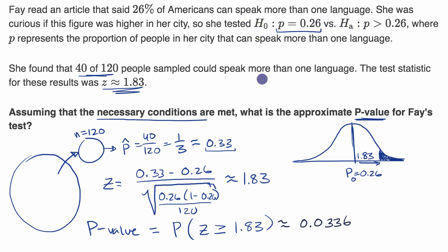However, if her significance level was lower than this, for whatever reason, if she had, say, a 1% significance level, then she would fail to reject the null hypothesis.